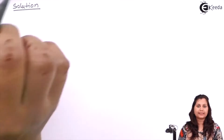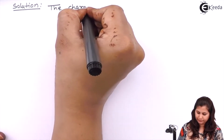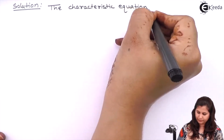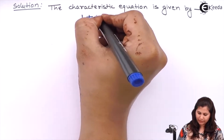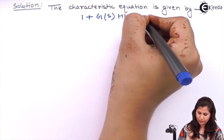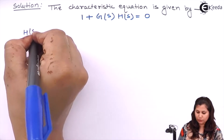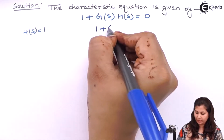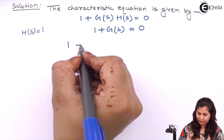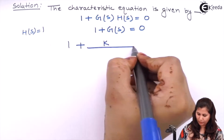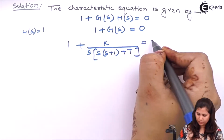First we will write the characteristic equation of this system. The characteristic equation is given by 1 plus G(s)H(s) equals to 0. Because this system is a unity feedback system, H(s) will be equals to 1. So the characteristic equation becomes 1 plus G(s) equals to 0. Putting the value of G(s), we will have 1 plus K upon S times (S+1) times (S+T) equals to 0.